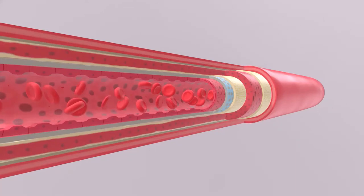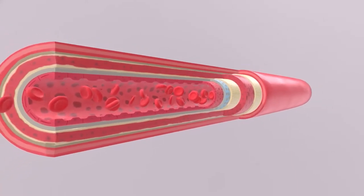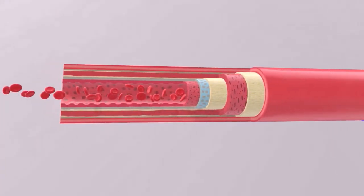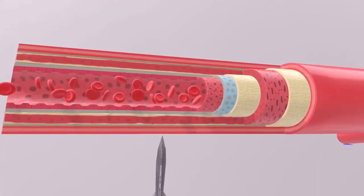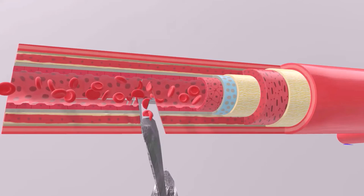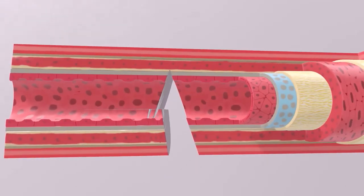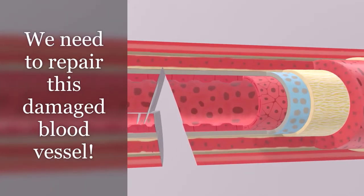Let's explain what happens in a really fun way. Here we have a blood vessel, and we see the various layers of the blood vessel. Imagine someone takes a knife and cuts this blood vessel — of course, blood would leak out. So we need to repair this damaged blood vessel.